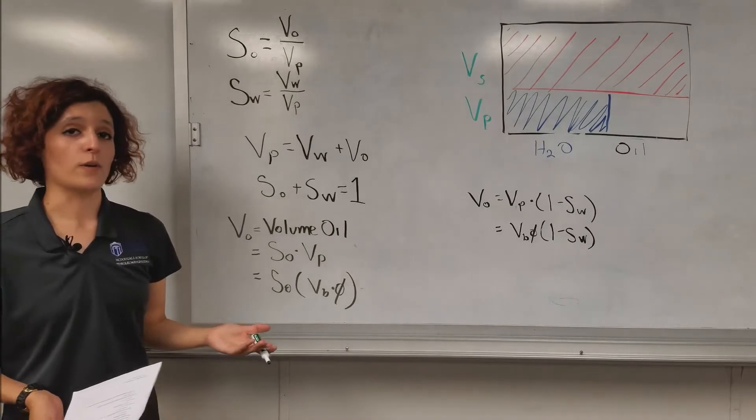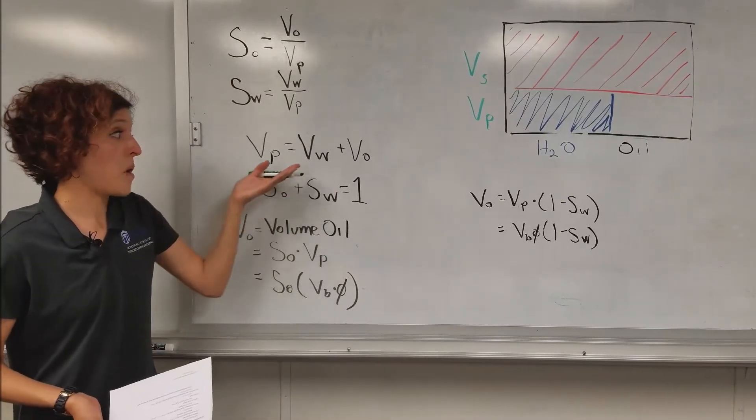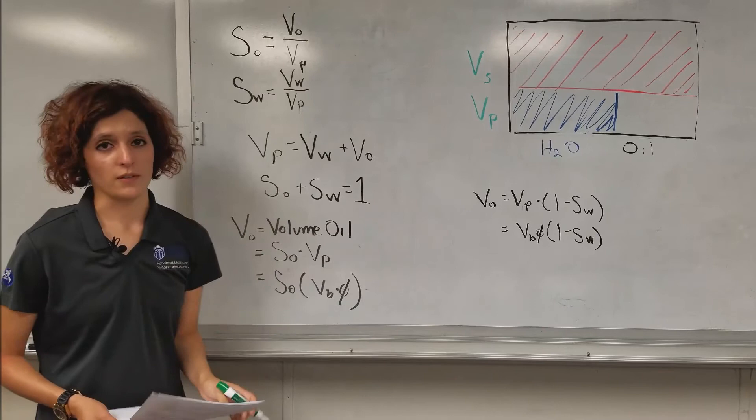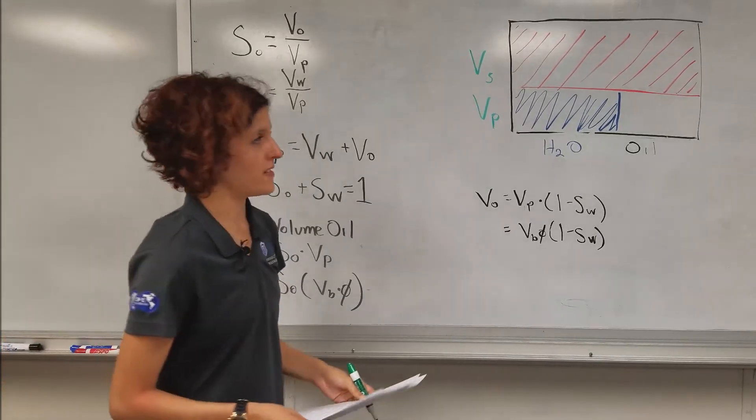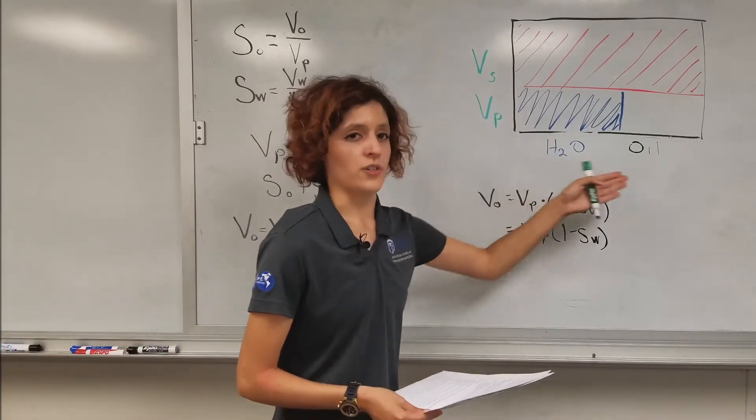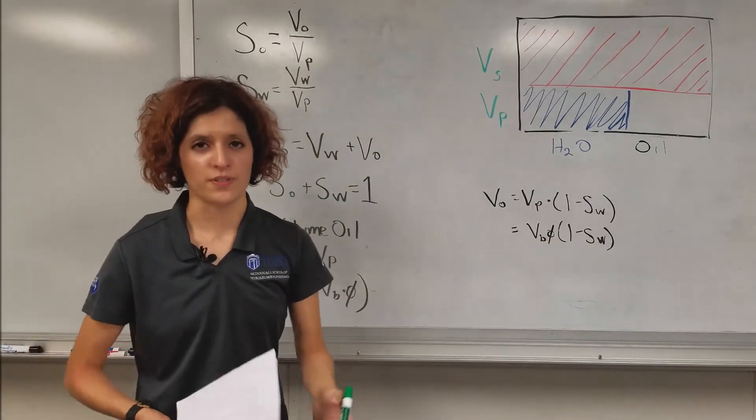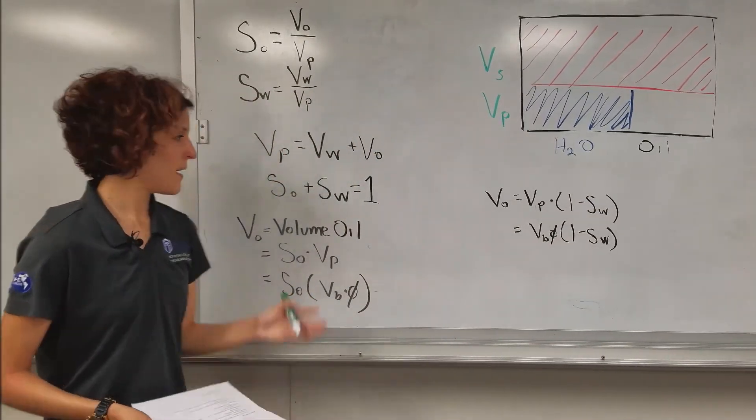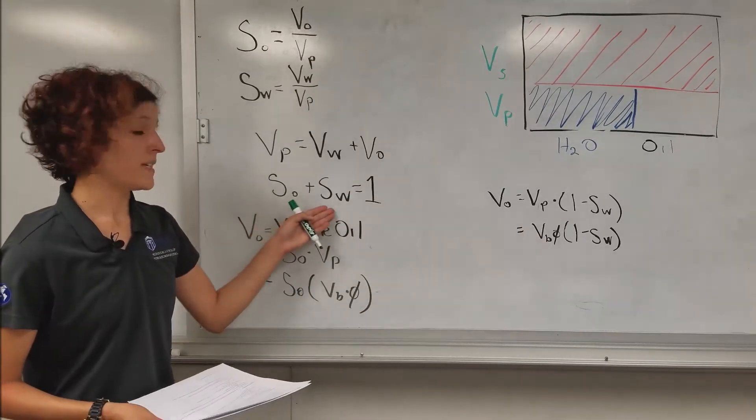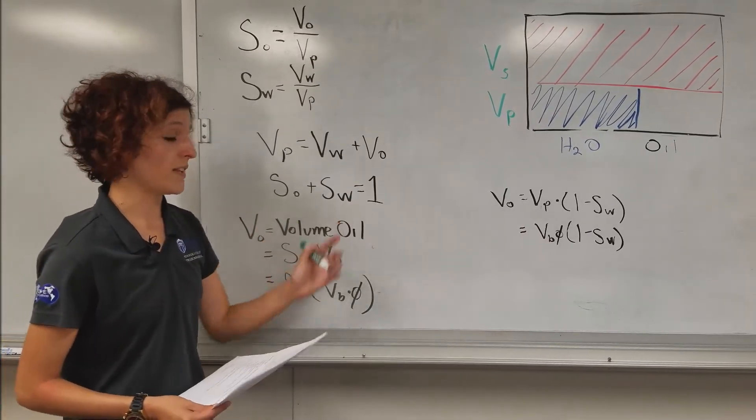And therefore, our pore volume is just volume of water plus volume of oil. If all we have in this system is just water and oil, they all have to sum to be one, a hundred percent. So, S sub O plus S sub W would equal one in this case.